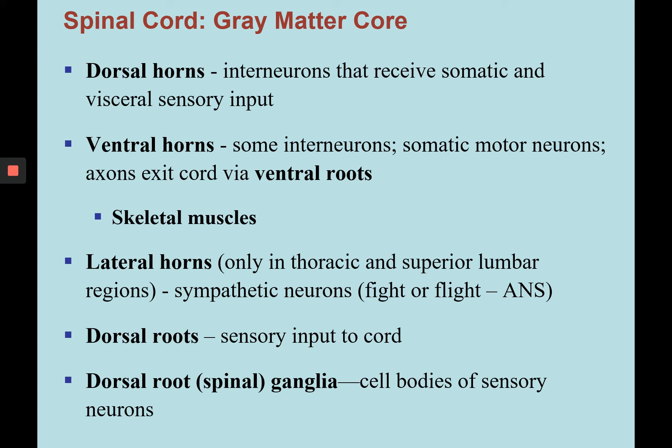There are several structures in the spinal cord: dorsal horns, ventral horns, lateral horns, dorsal roots, and dorsal root or spinal ganglia. The dorsal horns are parts of spinal nerves adjacent to the back of the spinal cord. They include some interneurons but mainly sensory neurons that receive somatic and visceral sensory input. The ventral horns are near the ventral nerve roots abutting the anterior side of the spinal cord, and are gray matter that may contain interneurons or somatic motor neurons that receive motor outputs and send them out of the spinal cord.